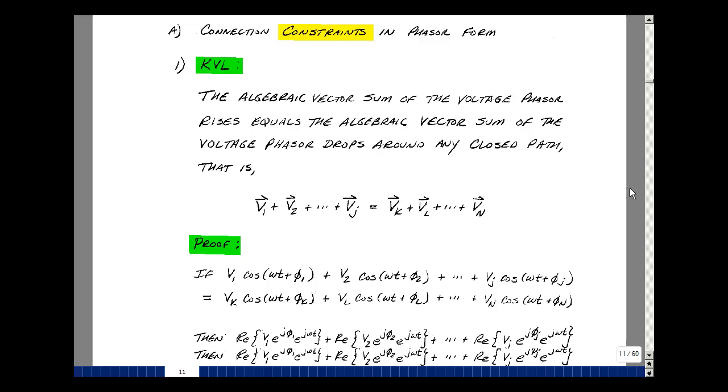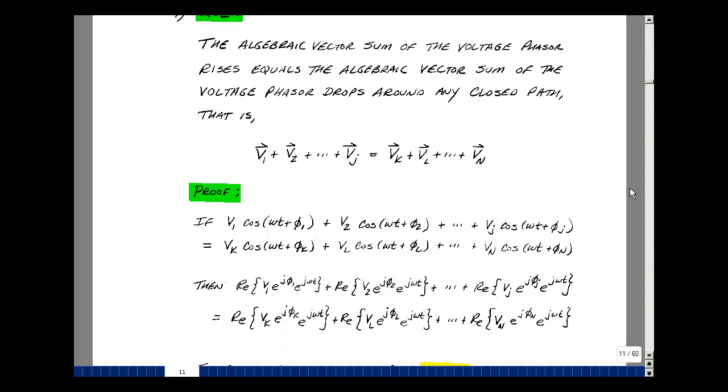Let's go to the time domain and do the same thing. Let's take voltage V1 through V sub j. Say those are our rises in voltage. But they're now cosines as a function of time, but with different magnitudes and different angles. K through N are our drops. Same thing. Cosine functions with different values of magnitude and angle.